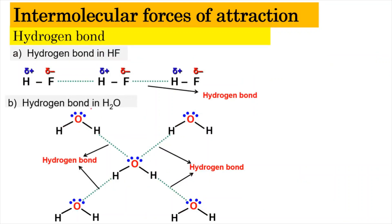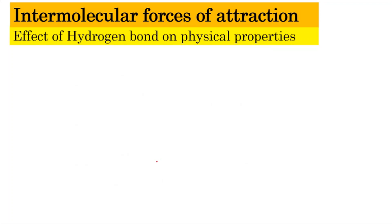Hydrogen bonds can exist in H-F, represented as dotted lines between molecules. For water, each water molecule can form four hydrogen bonds per molecule — from the partially negative charge of oxygen to the partially positive charge of hydrogen on another molecule. We will now look at the effect of hydrogen bonding on physical properties.